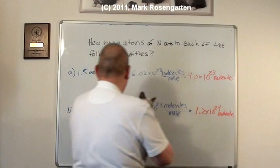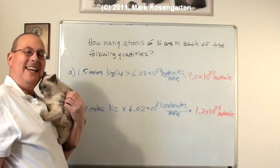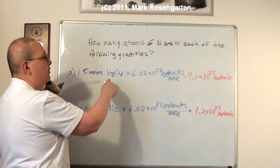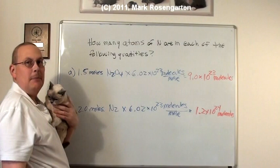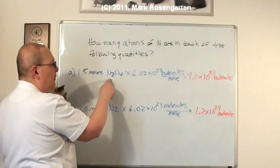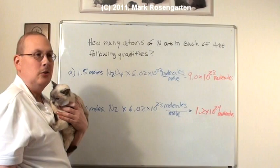But you're not done yet. You see, part of this problem is that each molecule of N2O4 contains two atoms of nitrogen. Now the question is asking, how many atoms of nitrogen? Now we know how many molecules there are. Each molecule contains two atoms of nitrogen. So to figure out how many atoms there are, simply take the number of molecules and multiply it by 2.